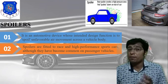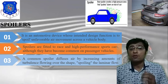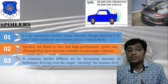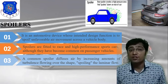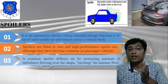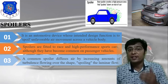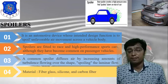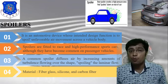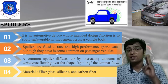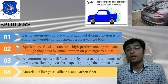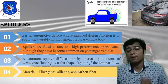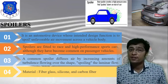Spoilers have become common on passenger vehicles also. A spoiler diffuses air by increasing the amount of turbulence flowing over the shape, spoiling the laminar flow. The rear spoiler creates a high pressure area that pushes down on the rear of the car. Materials used for spoilers include fiberglass, silicon, and carbon fiber, selected according to the application.